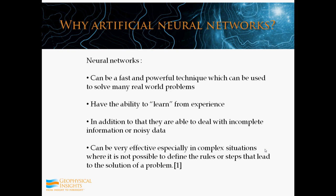Why would you want to use neural networks? They can be a very fast and powerful technique used to solve many real-world problems in our industry. For instance, they are used for seismic facies classification and lithofacies classification. Neural networks have the ability to learn from their experience — as more and more data is presented to them, they learn about the data. In addition, they are able to deal with incomplete information or noisy data. For instance, in our industry they are used to complete well log data where some portion of it is missing, using the other well logs to train the neural network. So they can be used in very complex situations where there isn't a way to define certain rules to program.